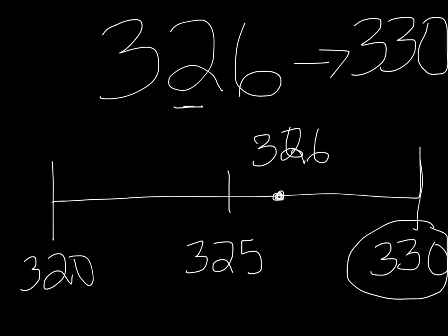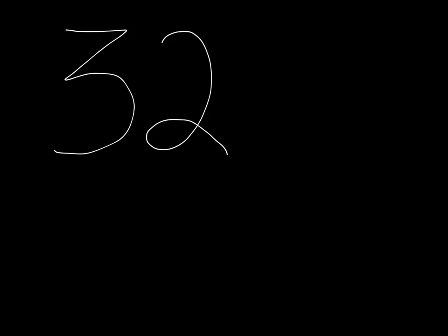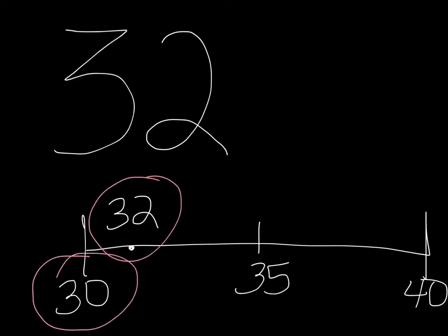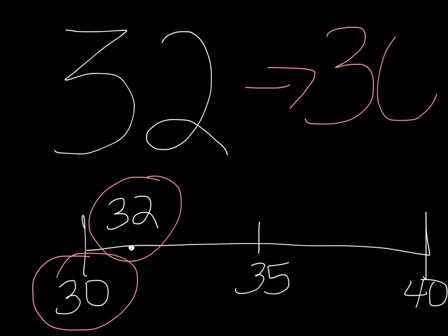Now I'd like to give you some practice problems. I'm going to give you the number 32, and I want you to pause the video and put 32 on a number line between the tens 30 and 40. Pause your video and do that for me. Okay, so you should have put 32 on a number line between 30 and 40, and 32 would be somewhere in this area. We can tell just by looking that 32 is closer to 30. So if we were rounding 32 to the nearest ten, we would round it down to 30.